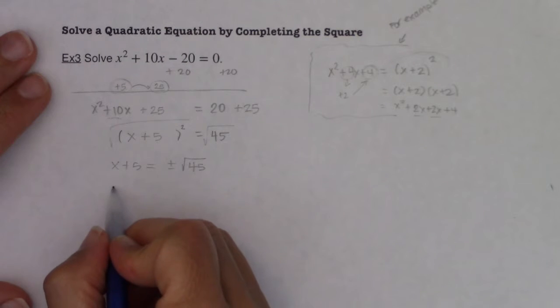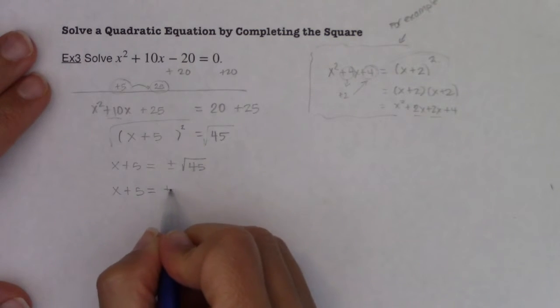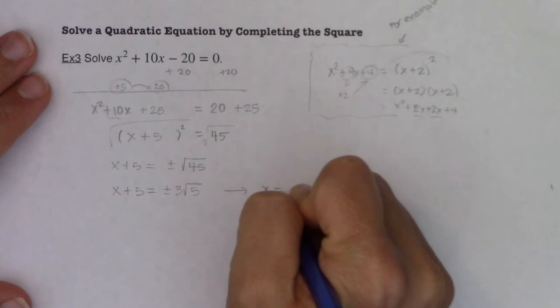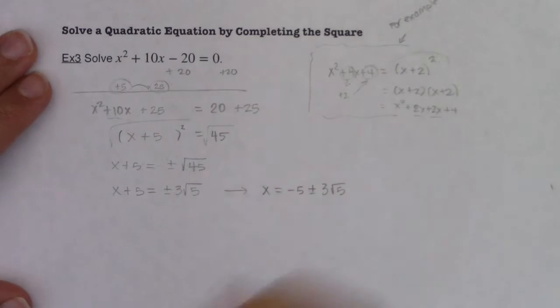So if I look at this, I can simplify. This is x plus 5. Just so we start speeding things up, what's living inside of 45 is 9 and 5. So this will be plus or minus 3 root 5, all right? And if I move the 5 over, my end answer will be negative 5 plus or minus 3 root 5, okay?